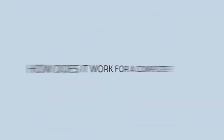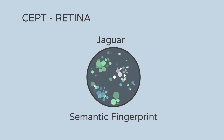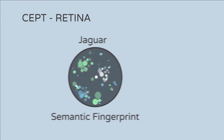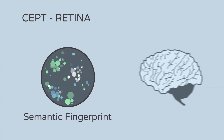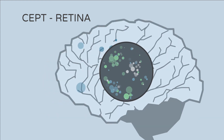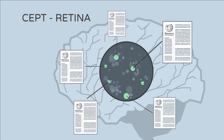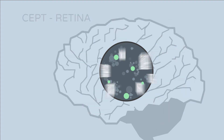Now, how does it work for a computer? The SEPT retina converts a word into a semantic fingerprint — a data format similar to the one used by the human brain. The retina is trained using large amounts of text to cover all possible aspects of a language.